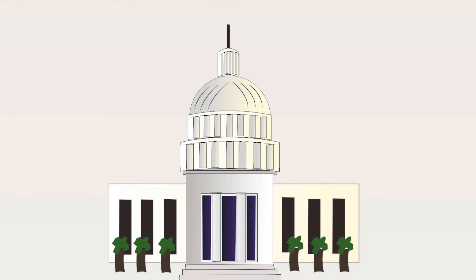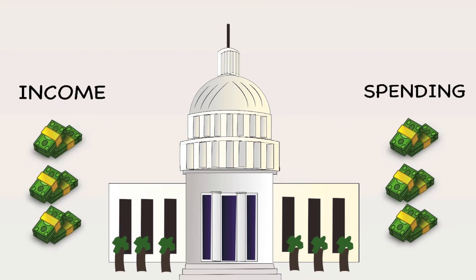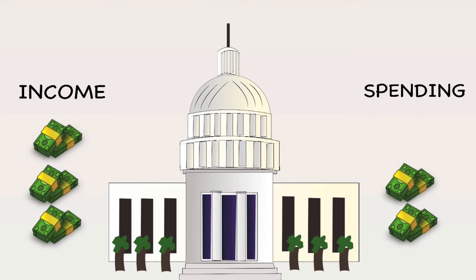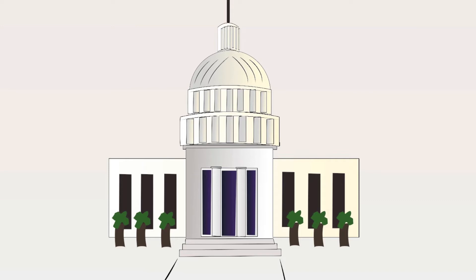It then spends this money on the military, Medicare, infrastructure, and all sorts of other various social programs. In order to not operate at a deficit, all the government has to do is prepare a budget in which their spending is equal to or less than its income. Seems like a pretty simple concept, but this has been something they have been unable to do for several years. In fact, since 1970, the federal government has run a deficit for every single year except for four years from 1998 to 2001.